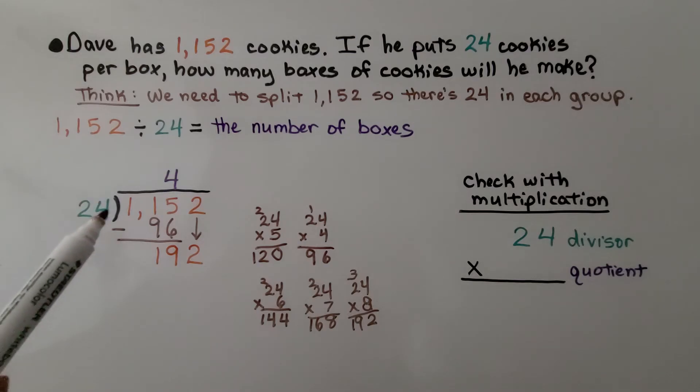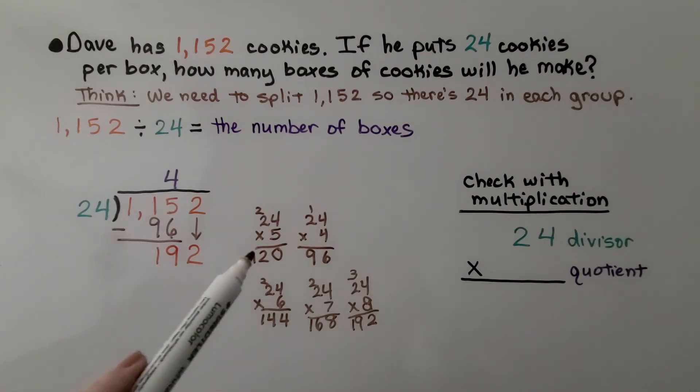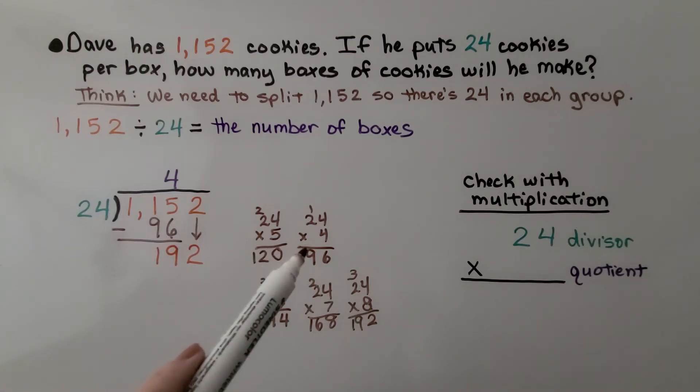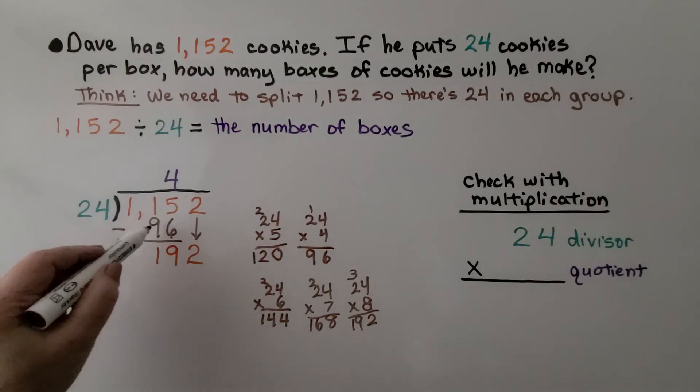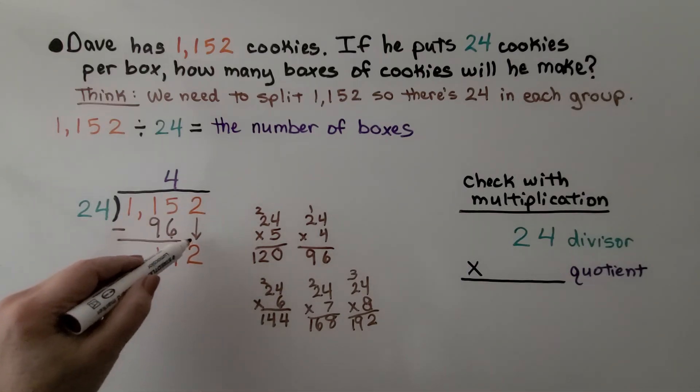For long division, we write 1,152 inside the division symbol and the 24 divisor on the outside. We ask ourselves, how many times 24 can fit into 1? It doesn't. Can it fit into 11? Nope. Can it fit into 115? Yes. We can estimate that 5 times would be too many because that would be 120. But if we do 4 times, then that would be 96. So we subtract the 96, we get 19, and then it's the 2's turn to come down.